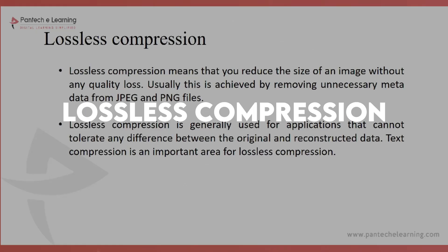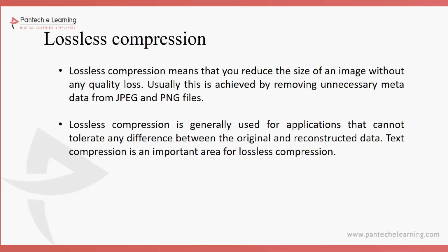With lossless compression, the main goal is that whenever we convert an image into any format, the image quality should not be lost, and at the same time the file size should be reduced. For example, from 100 KB to 50 KB — but there should be no loss in quality. Whether the image is 240 pixels, 720 pixels, or 1080 pixels, if you compress an 1080p image from 800 KB to 500 KB, it should still remain at 1080 pixels and not be reduced to 240 pixels.